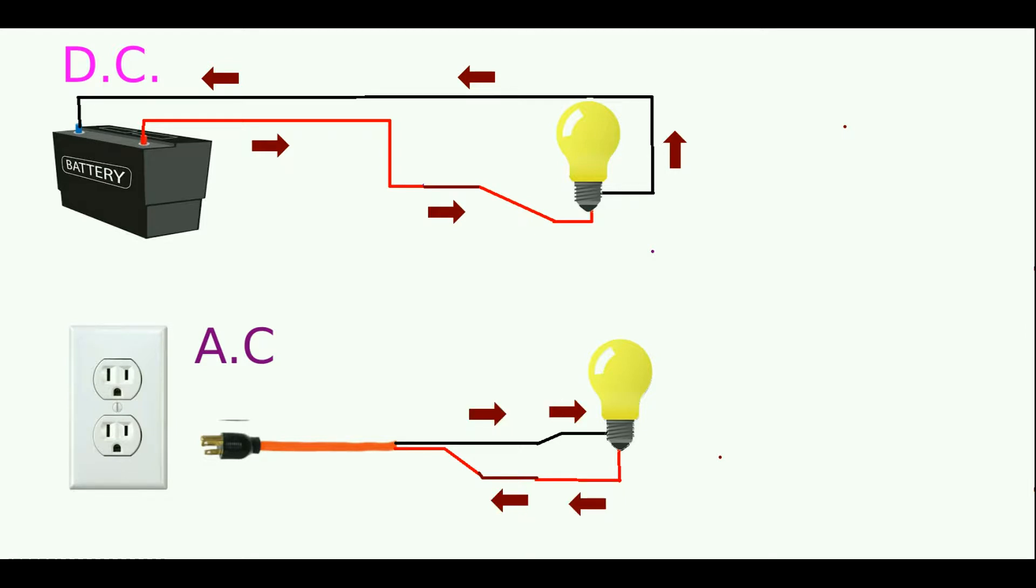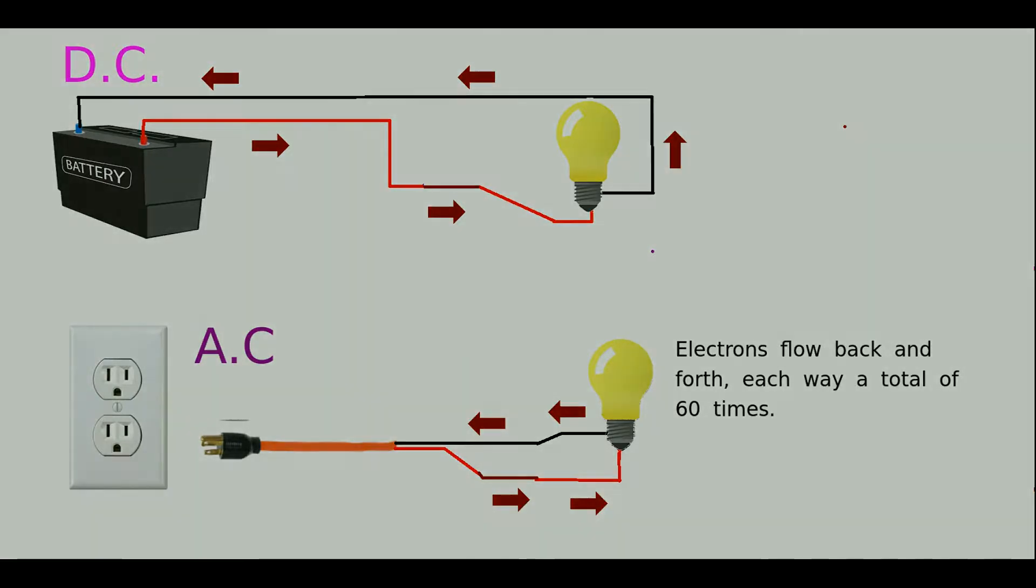When the switch is closed, you see that the electrons start going back and forth. They are alternating on the direction of movement. As a matter of fact, this light is flickering at a rate of 120 times per second. Yes, electrons go back and forth and the light will be flickering, but you won't be able to see it. That is what AC is.